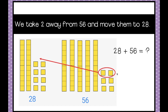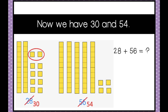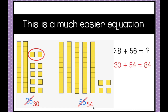We're going to do that by taking 2 of the blocks from 56 and moving them over here. Now we haven't changed the sum or the answer at all — we've only changed the question. We've changed the question to 30 plus 54. 30 plus 54 is a much easier question to add in our heads, so 30 plus 54 is 84. Because 30 plus 54 is 84, we also know that 28 plus 56 is 84.